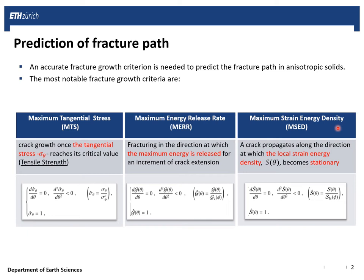Something important to mention is that all these models are also applicable in anisotropic cases. In anisotropic solids, the main difference is that all of the critical values in the denominator of the normalized function are now direction-dependent properties.